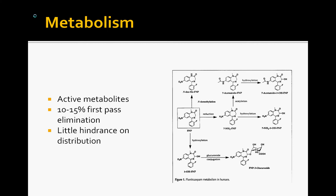When ingested orally, which is most of the time, there is a first-pass effect — about 10–15% of flunitrazepam is brought immediately to the liver via the hepatic portal vein and metabolized and excreted. Though this is a significant percentage, it still has little substantial effect on overall distribution of the molecule because there is about 64–77% bioavailability of flunitrazepam.